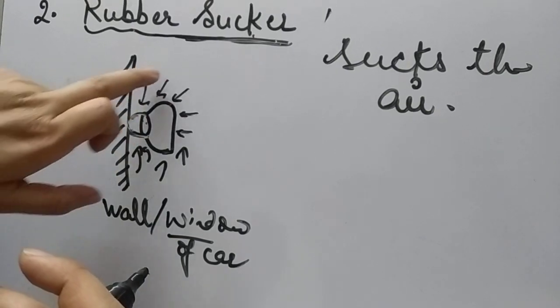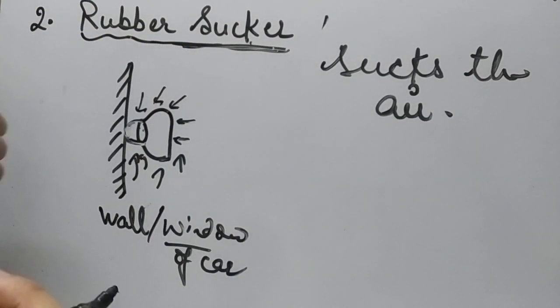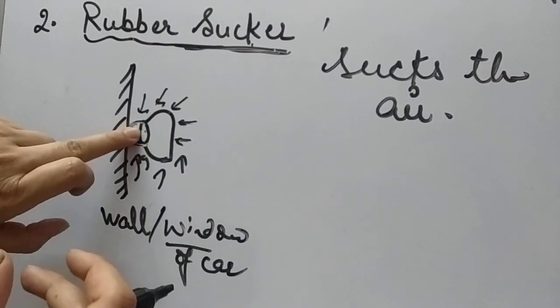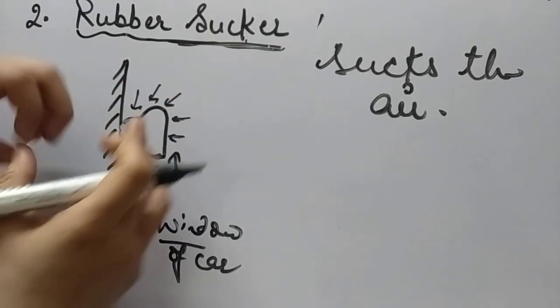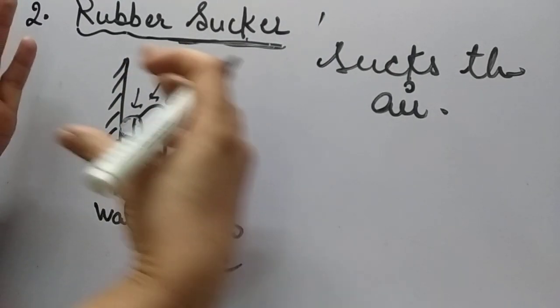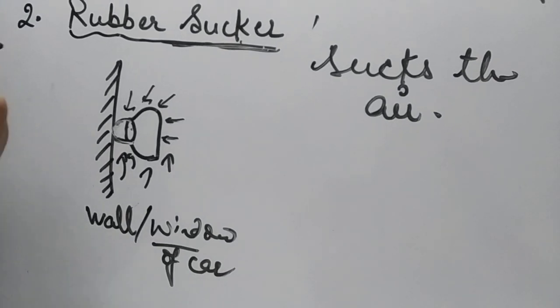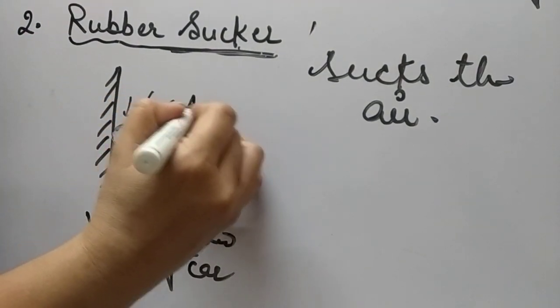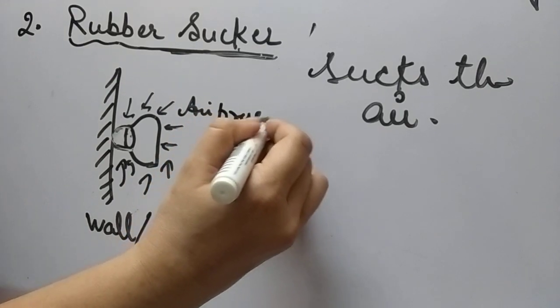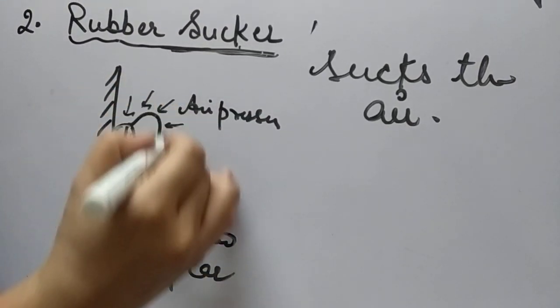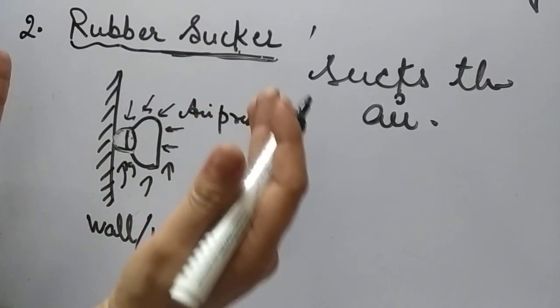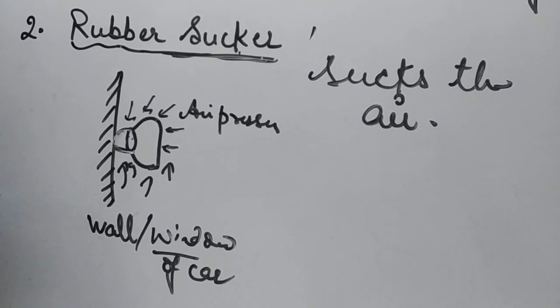Since there is no air, the air outside is pushing the rubber sucker here. Because there is no air here, but the air is pushing it and bringing it near the window and it gets fixed to the window like this. It is all because of the air pressure which is present here. This air is applying pressure over the rubber sucker to make it fixed to the window of the car.